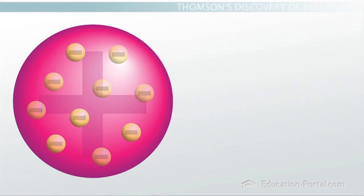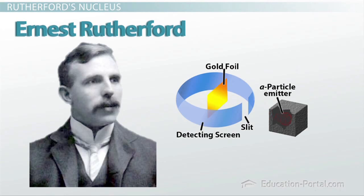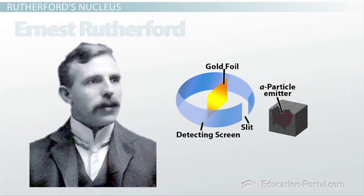A few years later, Ernest Rutherford, one of Thomson's students, did some tests on Thomson's plum pudding model. The members of his lab fired a beam of positively charged...